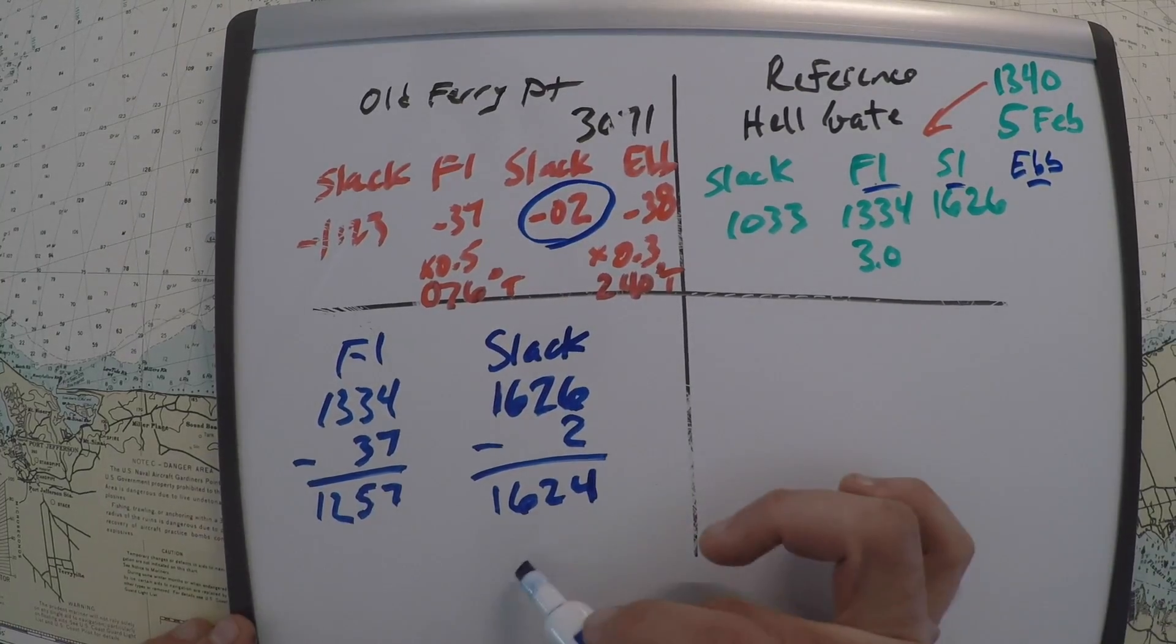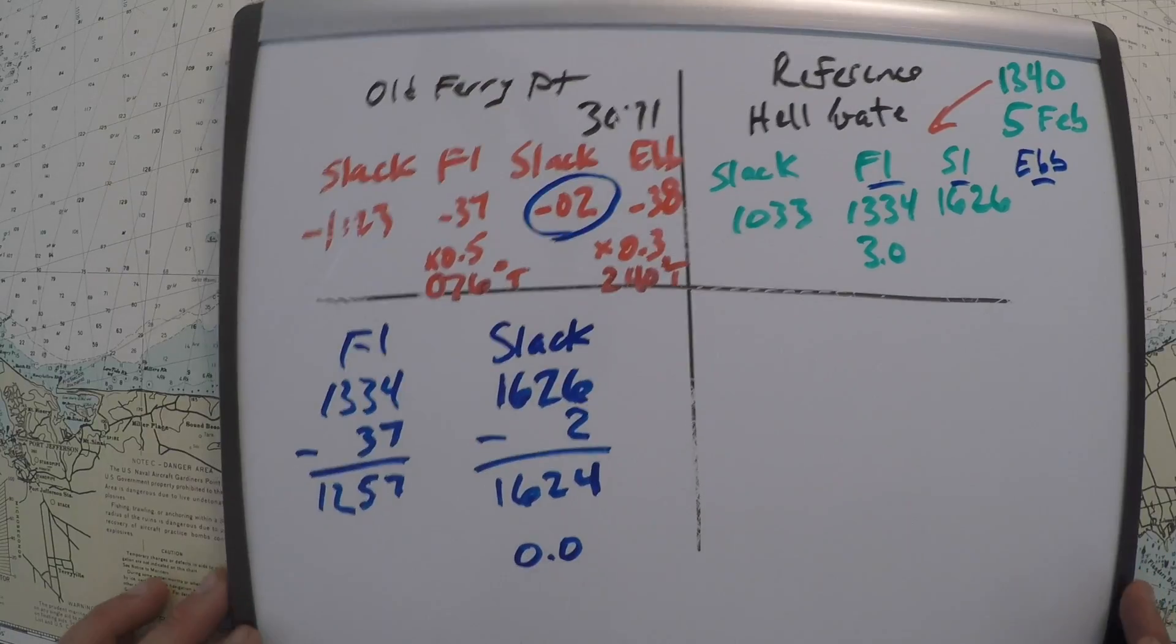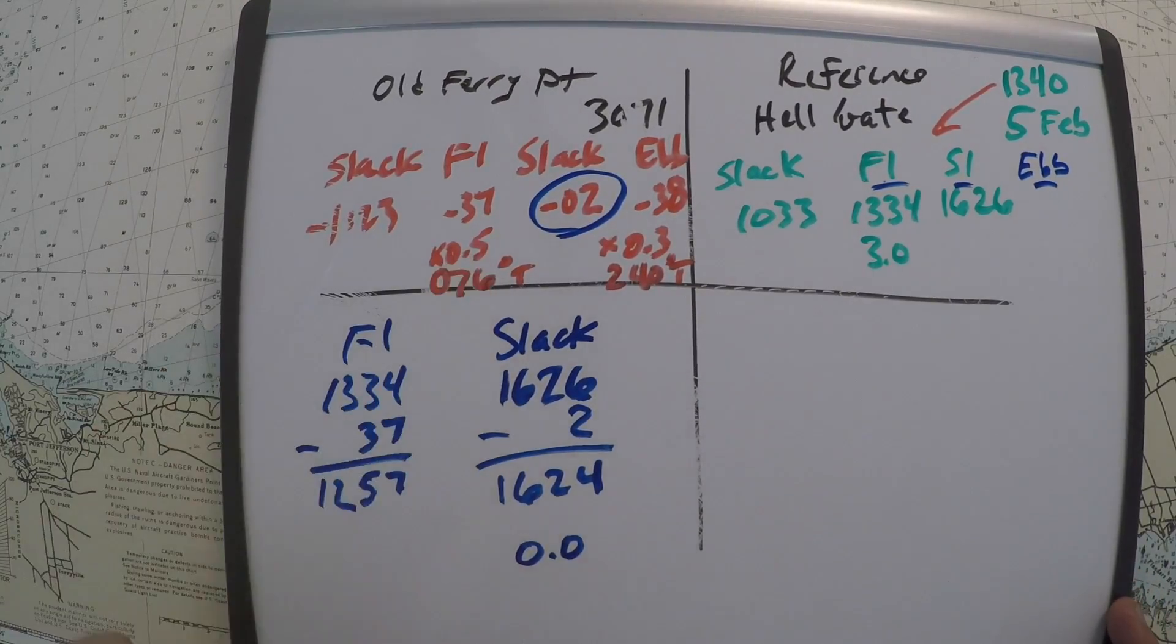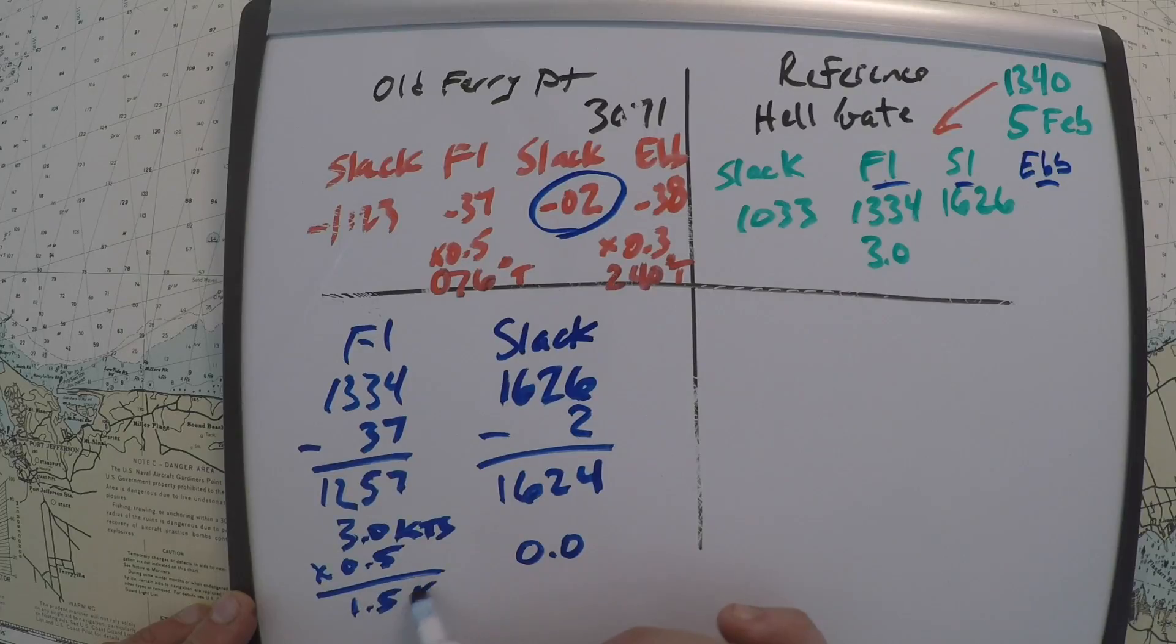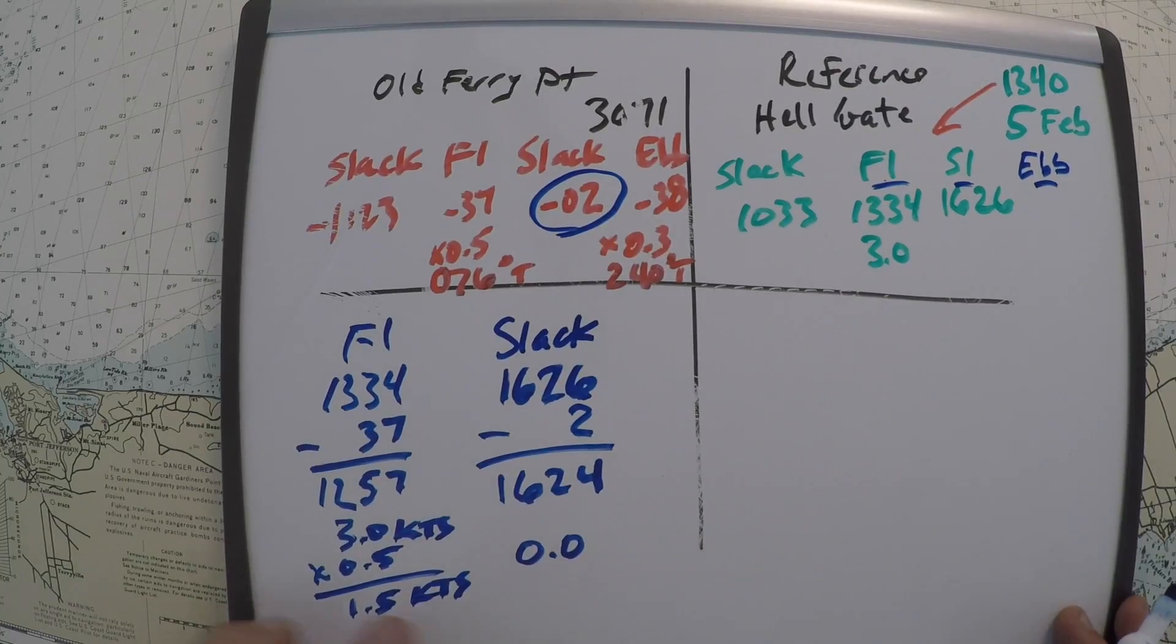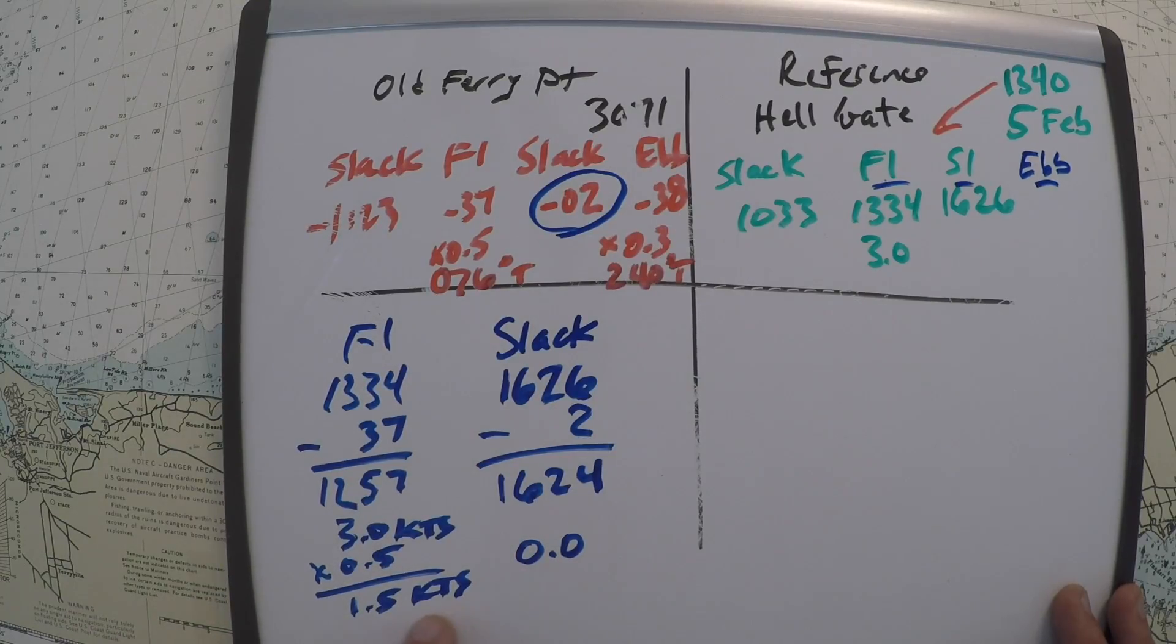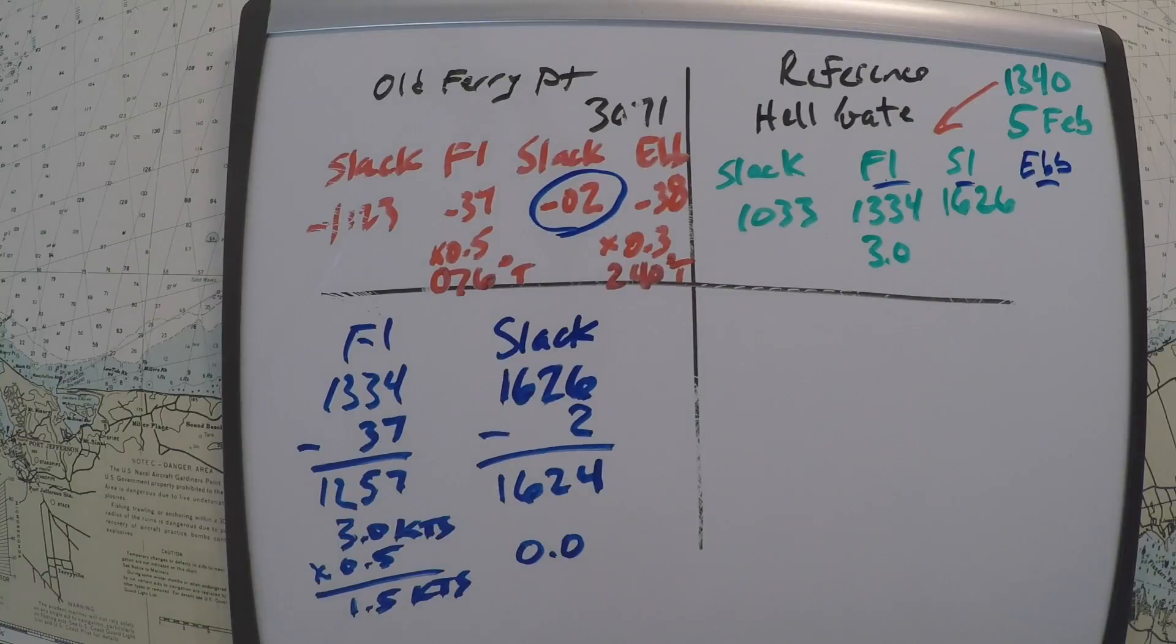And then for the intensity, the slack water is zero knots. And the flood was 3.0 knots times 0.5, 1.5 knots. So I've got kind of my time of max flood, 1257, my max intensity, 1.5, and my slack time.